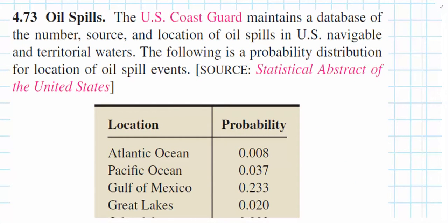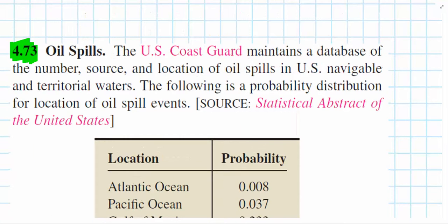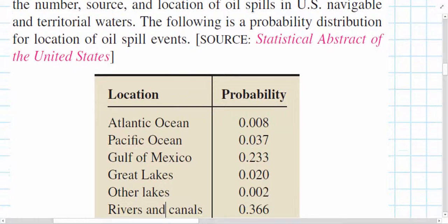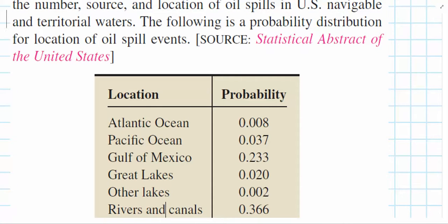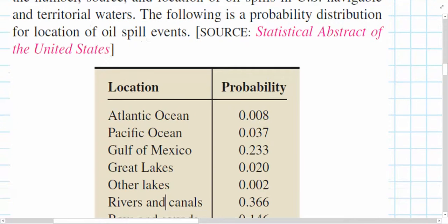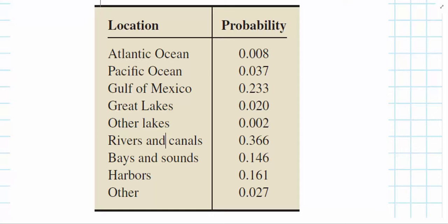Let's look at another example. This one comes right after the last problem. This is number 4.73. The U.S. Coast Guard maintains a database of the number, source, and location of oil spills in U.S. navigable and territorial waters. The following is a probability distribution for location of oil spill events. So, this doesn't represent where the oil itself is, but where the spill occurs.